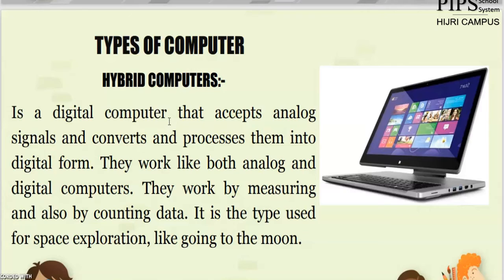Hybrid computers combine both types: they count data and they measure data. Both measuring and counting are available — in digital format and in analog format. The most common example is our cell phones, because they work as both digital and analog devices.